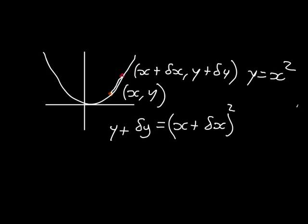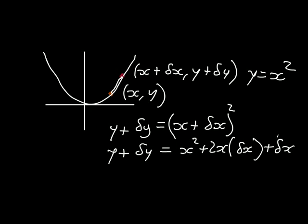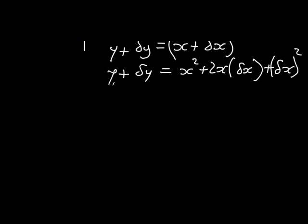As you can see already, we'll just expand that out properly. y plus delta y is equal to x squared plus 2x delta x plus delta x all squared. Now, y equals x squared in this case, so that equals that, and therefore we can cancel them out by minusing x squared, which effectively cancels the y.